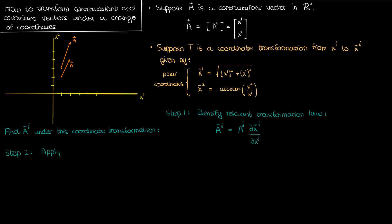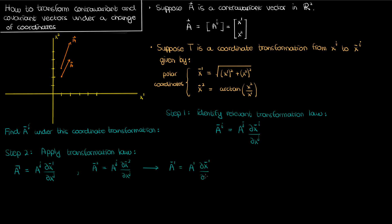The second step is to apply this relevant transformation law. Because we're working with a vector in a two-dimensional space, there are two components we need, and so two equations we need to solve. If this were a tensor of rank 2, we'd need to find four components and so on. Now j is a dummy index on the right hand side of both equations, so we'll need to sum over j from 1 to 2, and if we do that and expand things out, here's what we get.